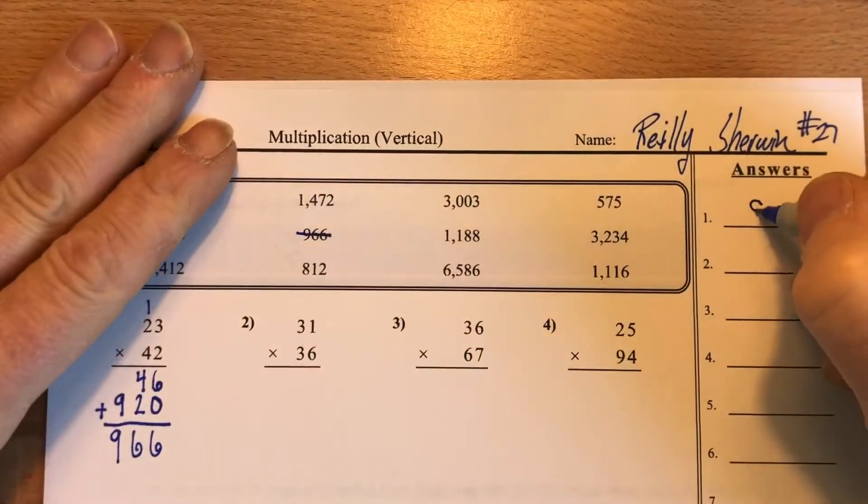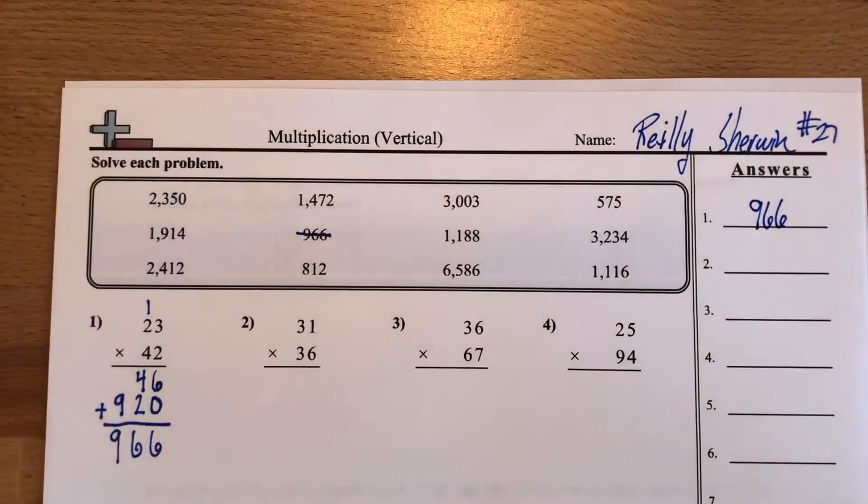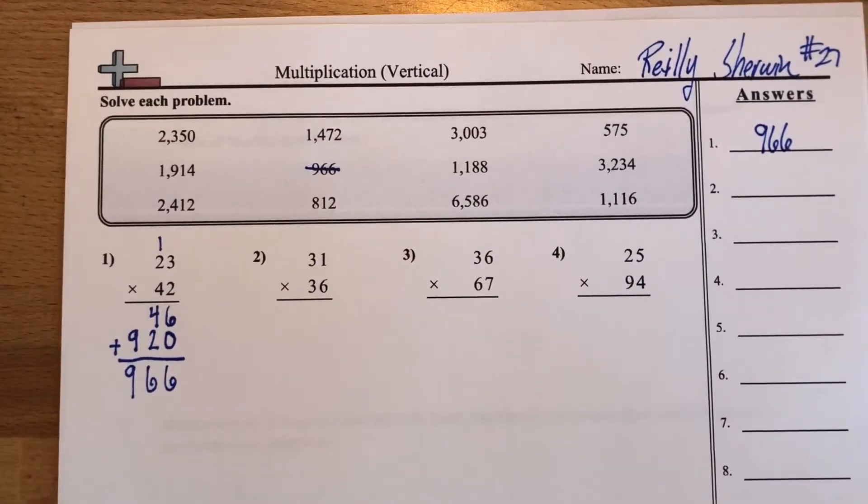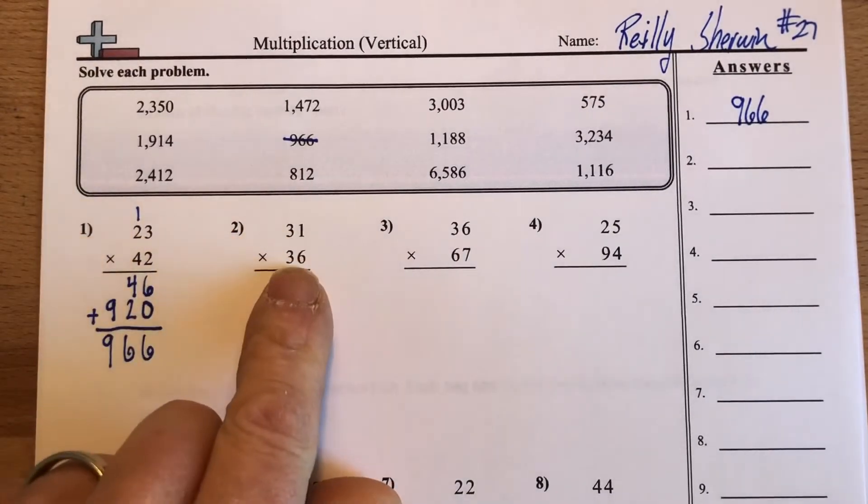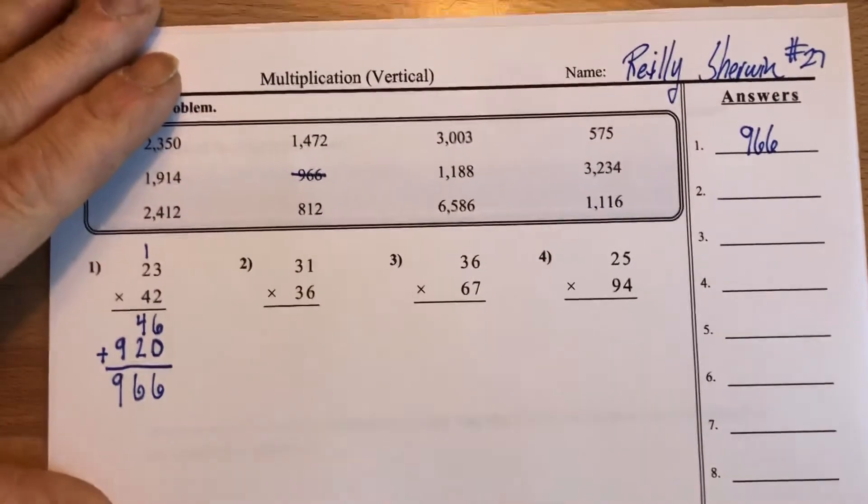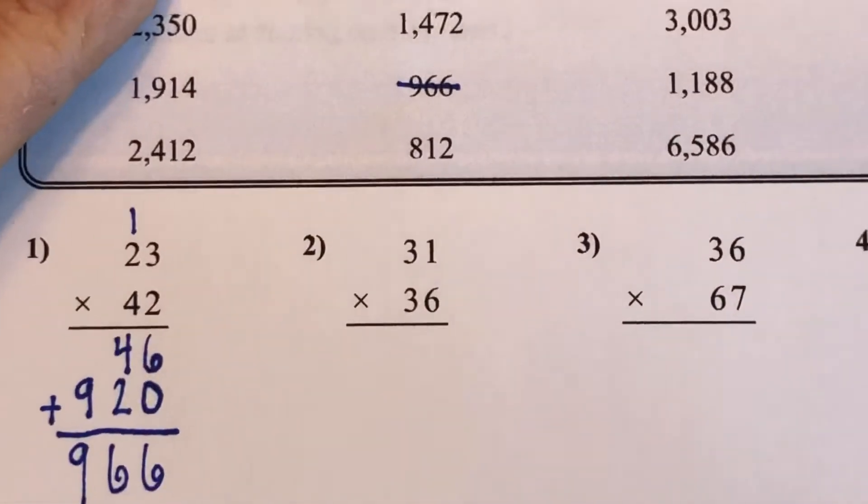And then over here, I write down my answer, 966. And then move on to the next one. So I'll do that. 36 times 31. Great. We are going to first of all zoom in so we can see it better.